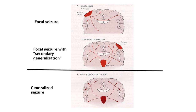A focal seizure will start in one part of the brain and might spread through other pathways, even from one hemisphere to the other. If that happens, there's another term: focal seizure that secondarily generalizes — it becomes generalized after it starts focally. Or the seizure can start and go to both hemispheres at the same moment.